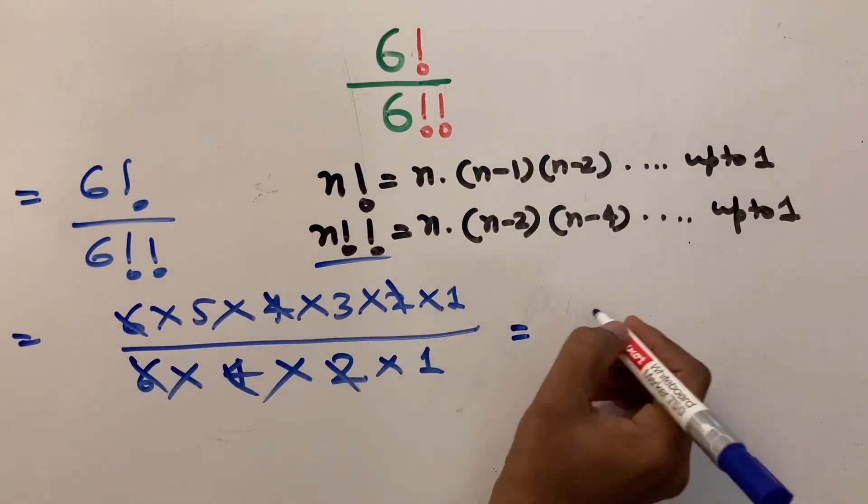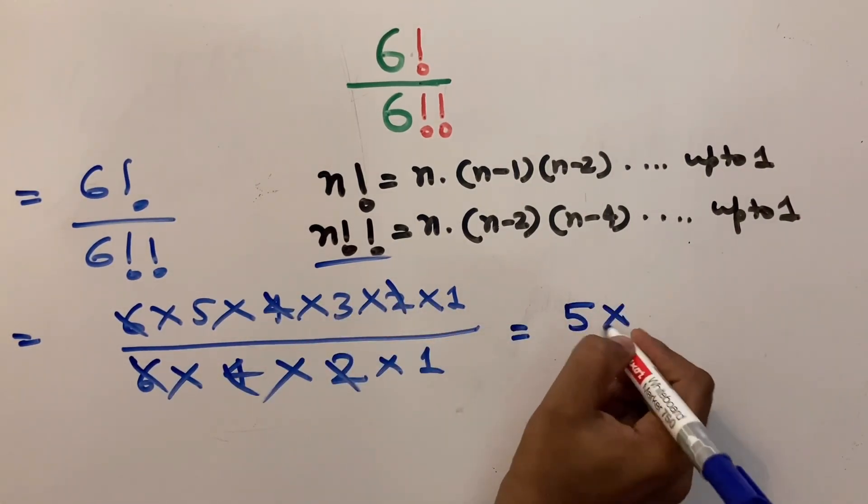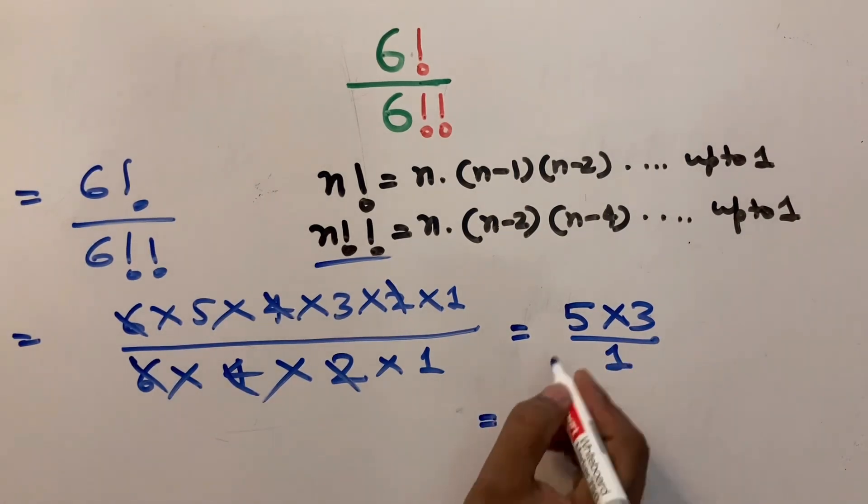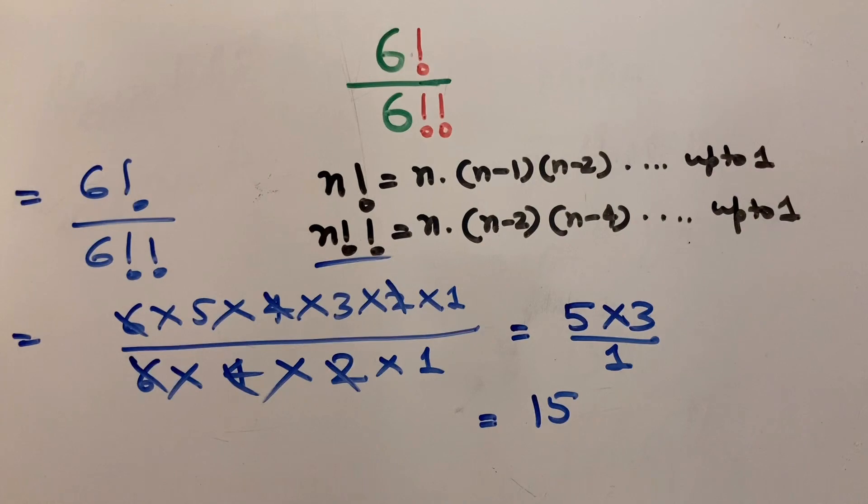So the remaining is 5 multiply 3 divided by 1 which equals 5 multiply 3 is 15. So for this problem 15 is our answer.